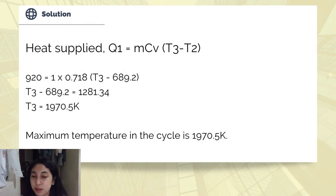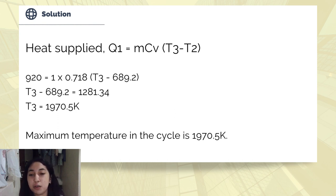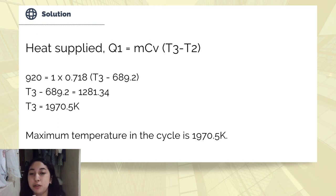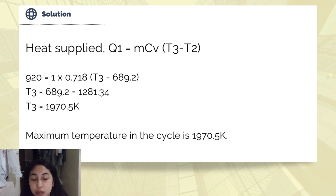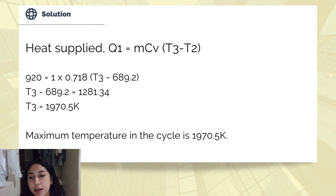To find the maximum temperature in the cycle, we use the heat supplied formula: Q equals Cv times (T3 minus T2). Substituting Q of 922 kJ/kg and Cv of 0.718: 922 equals 0.718 times (T3 minus 689.2). Solving, T3 equals 1,170.5 Kelvin, which is the maximum temperature in the cycle.